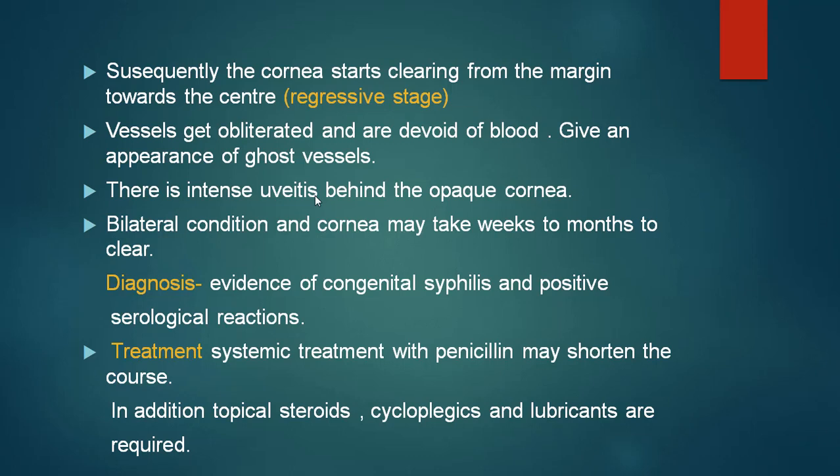Behind the opaque cornea there is intense uveitis, which is the primary condition, with possible involvement of the iris, ciliary body and even the peripheral choroid. This condition is most of the time bilateral and may take weeks to months to clear. Diagnosis is based on evidence of congenital syphilis and positive serological reactions. Treatment with systemic penicillin may shorten the course; in addition, topical steroids, cycloplegics and lubricants are needed.